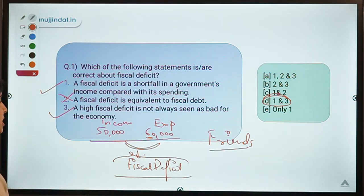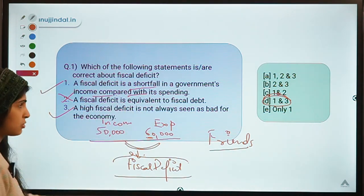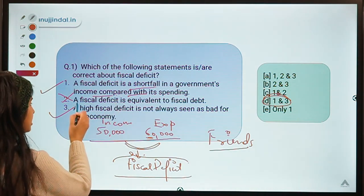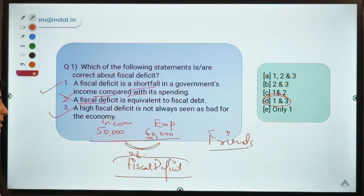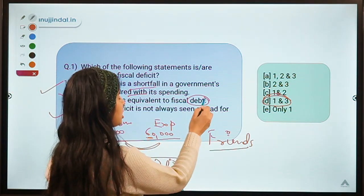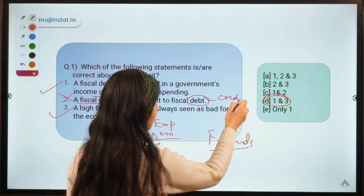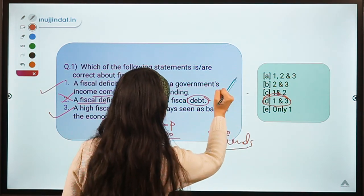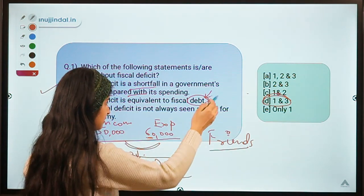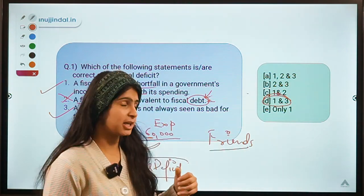So this is the basic concept of fiscal deficit. Coming to the statements: the first statement says it is a shortfall in a government's income compared with its spending — that is correct. Coming to the second statement, it says a fiscal deficit is equivalent to fiscal debt. This is not true, because debt is the total amount of credit that a government has taken from the market.